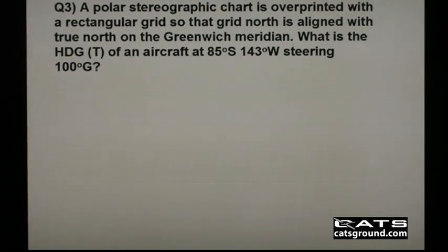In this grid navigation question, a polar stereographic chart is overprinted with a rectangular grid so that grid north is aligned with true north on the Greenwich Meridian.